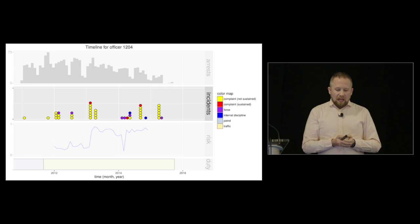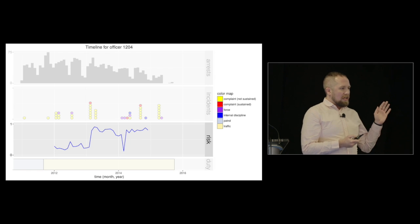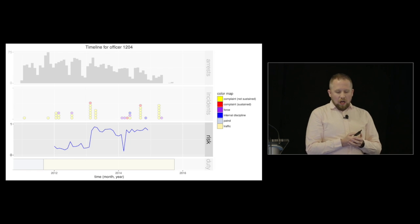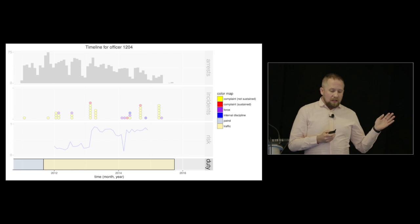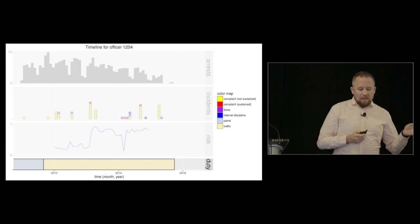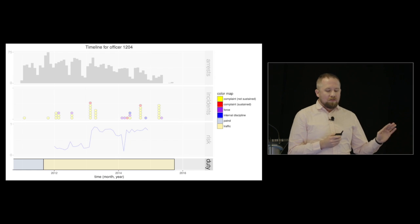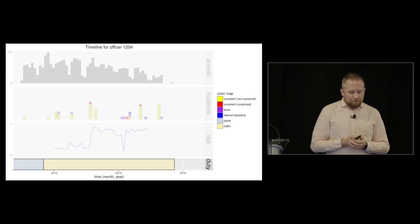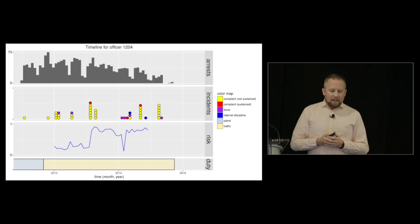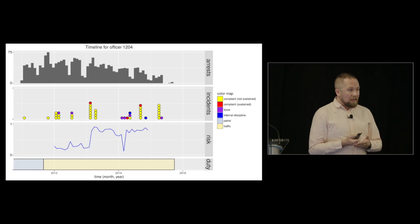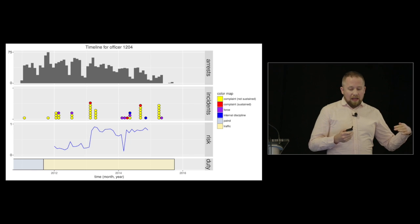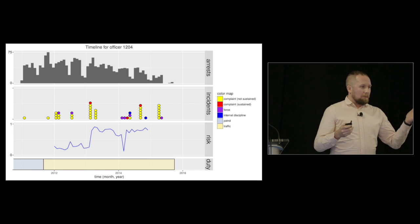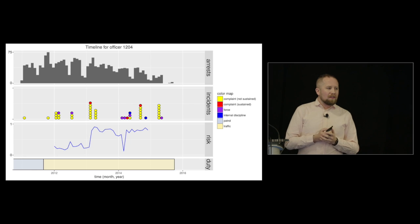And so we can see there are a number of these over time. We have our risk score as it was given every month. And then finally down here, we have the types of shifts that this officer did. So in the beginning, they were working patrol. And then towards the end of 2011, they started doing traffic duty. And so here we can see that this officer had a number of complaints, some of which were sustained. Their risk score started out fairly low, but then once we saw the sustained, it went up.